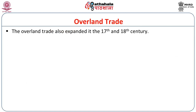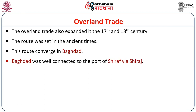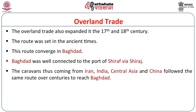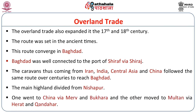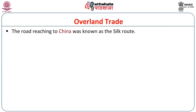The overland trade also expanded at this point of time. The history of overland trade goes back to ancient times, but because of the improvement of law and order, the ancient overland trade revived during this period. The route covered Baghdad, which was well connected to the port of Sharaf via Shiraz. Caravans from Iran, India, Central Asia and China followed the same route over centuries to reach Baghdad. The main highland divided from Nishapur — one went to China via Merv and Bukhara, and the other moved to Multan via Herat and Kandahar. India was part of this second route. The road reaching China was known as the Silk Route.